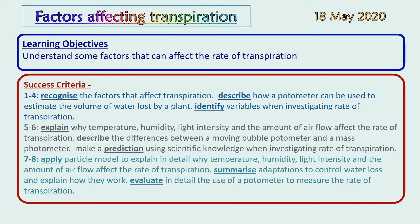For grades five to six, we need to explain why factors affect transpiration — such as temperature, humidity, light intensity, and airflow — so we need to say why they increase or decrease it, and we need to be able to describe the bubble that moves in the potometer. For grades seven to eight, when we go over the factors that affect transpiration, we'll need to have a go at doing particle models to show why that happens.